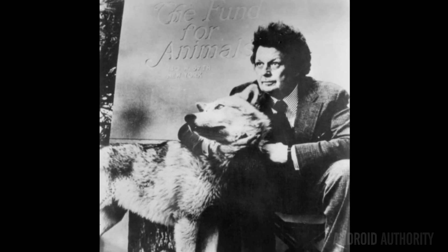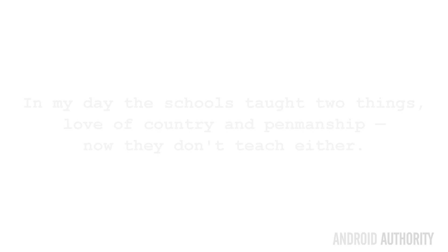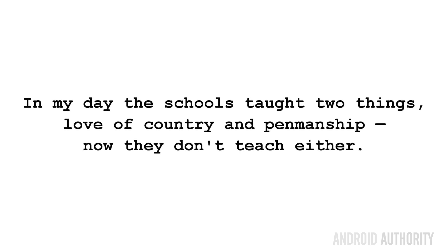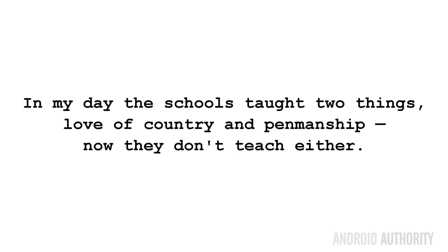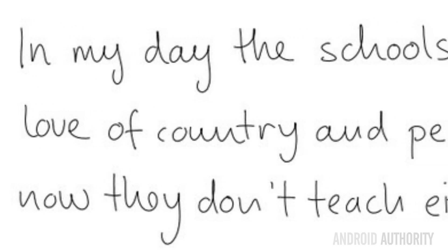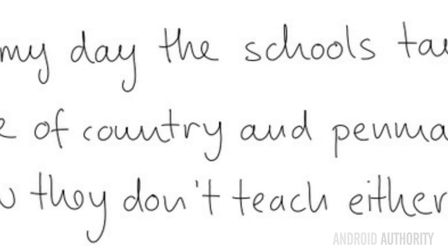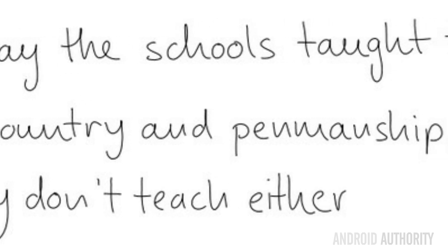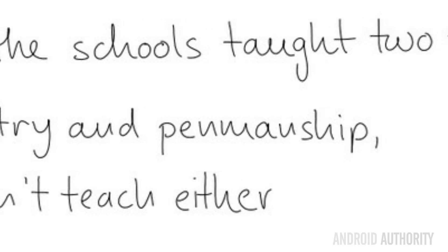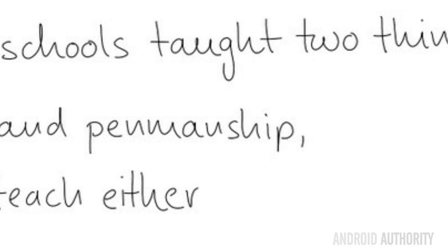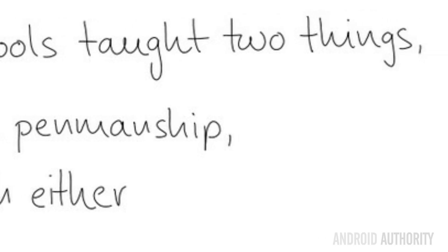Another example is teaching machines how to write. The handwriting sample shown was produced by a recurrent neural network. To train the machine, its creators asked 221 different writers to use a smart whiteboard and copy out some text. During the writing, the position of their pens was tracked using infrared, resulting in a set of x and y coordinates which were used for supervised training. As you can see from the results, they're quite impressive — the machine can actually write in several different styles and at different levels of untidiness.